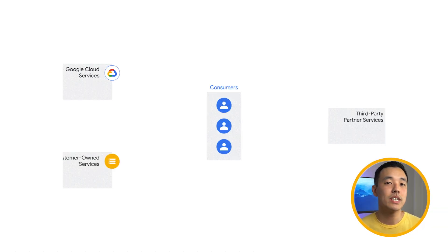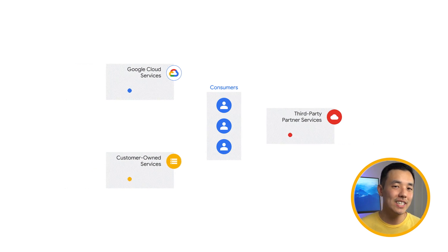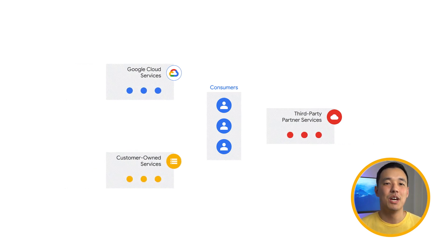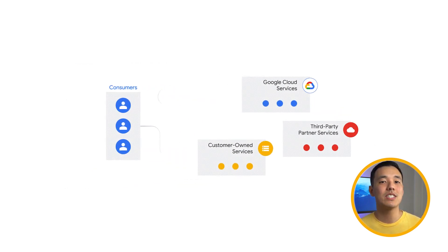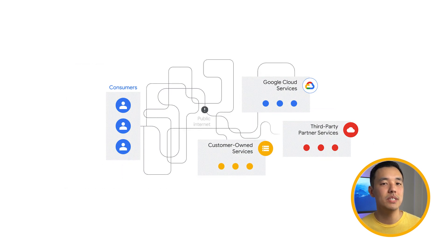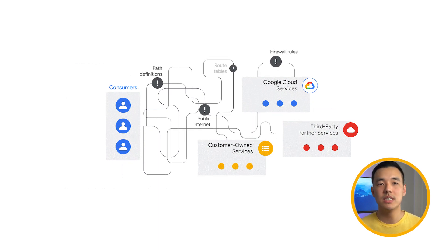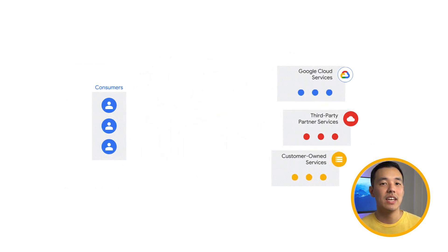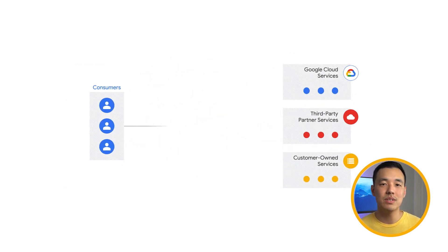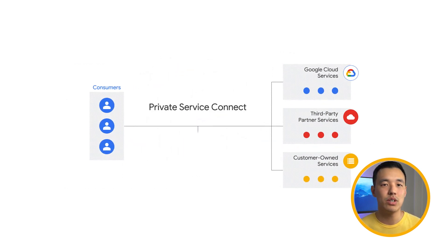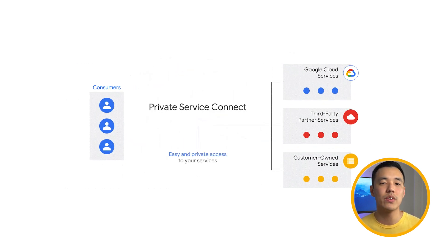Saving what I'm most excited to share for last: Private Service Connect. Private Service Connect enables private consumption of services across VPCs belonging to different groups, teams, projects, or organizations. It is simple, scalable, and secure since the traffic never goes over the internet.